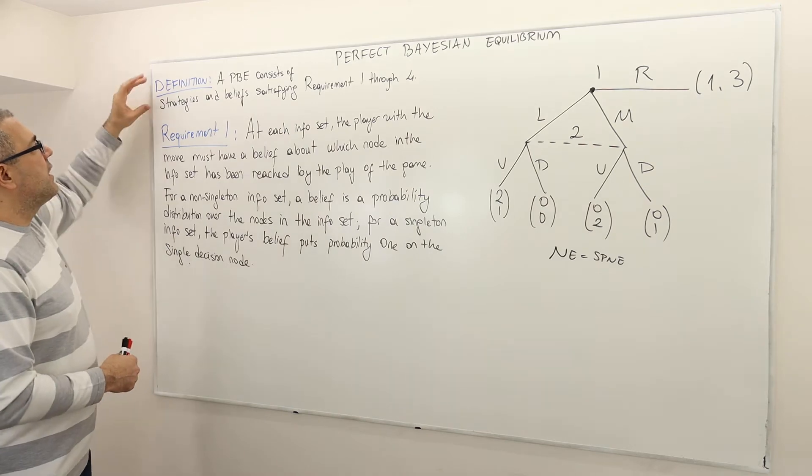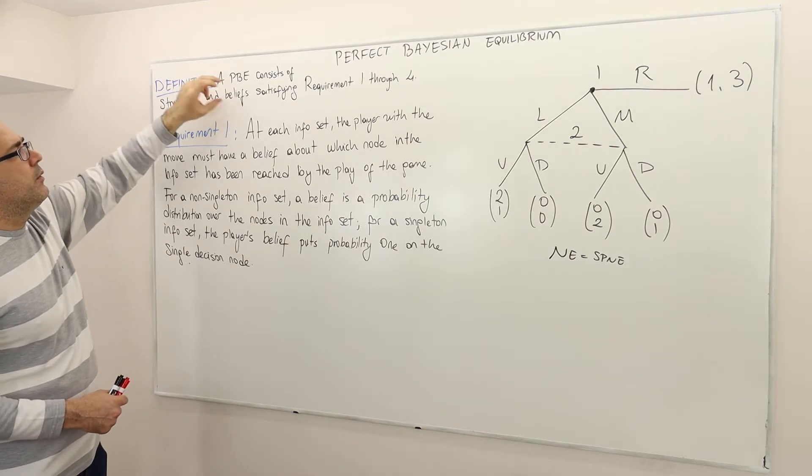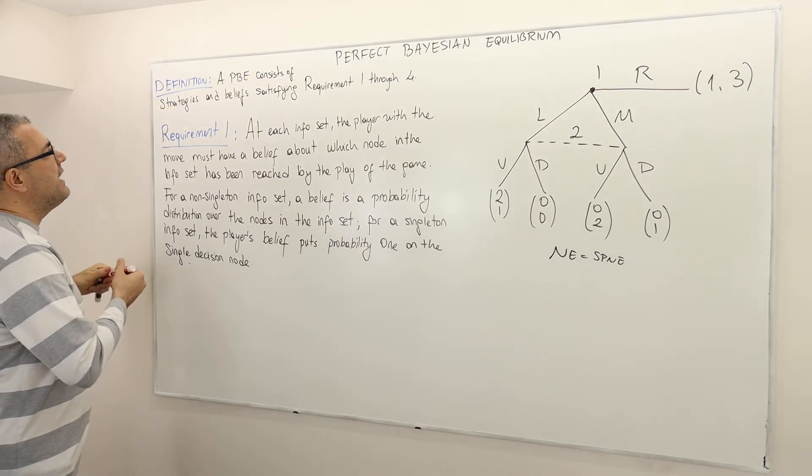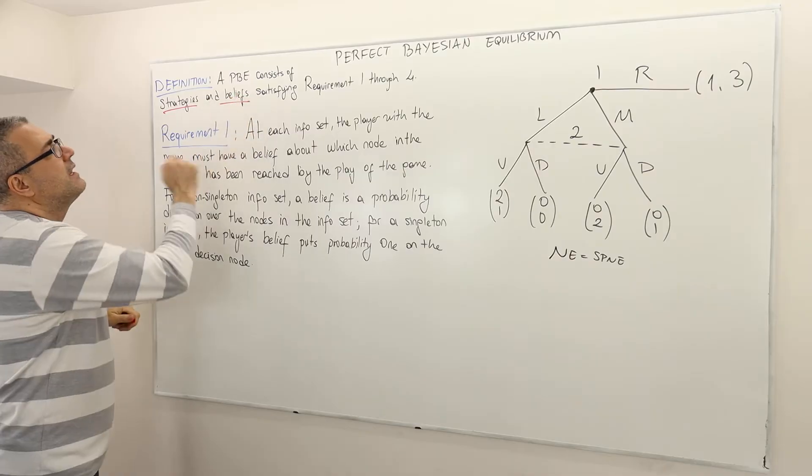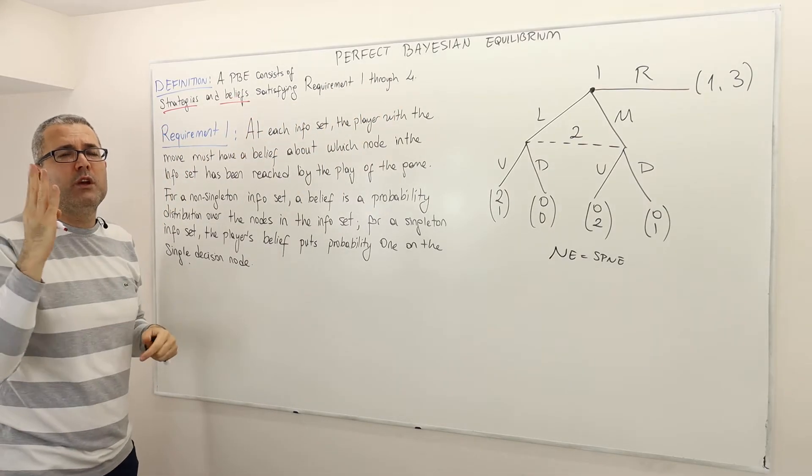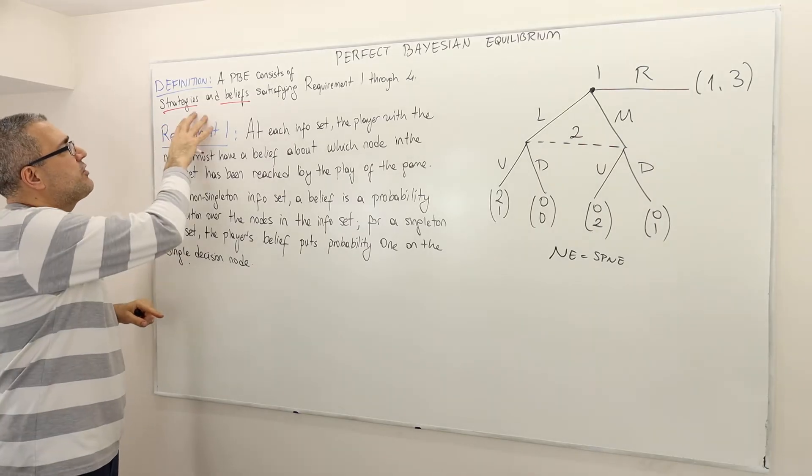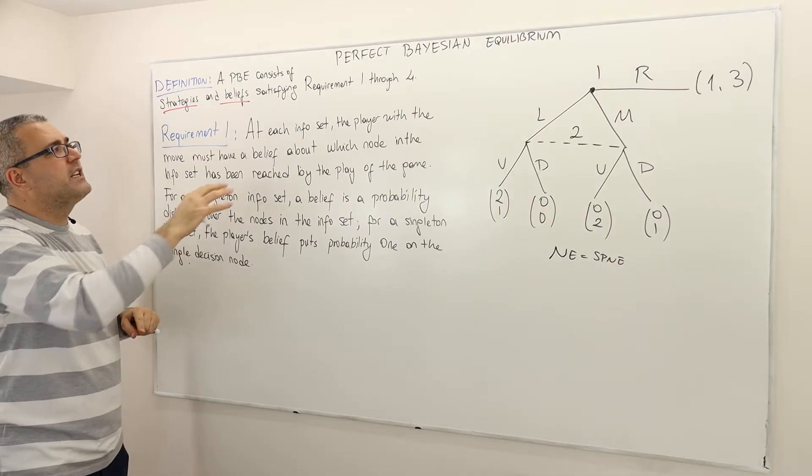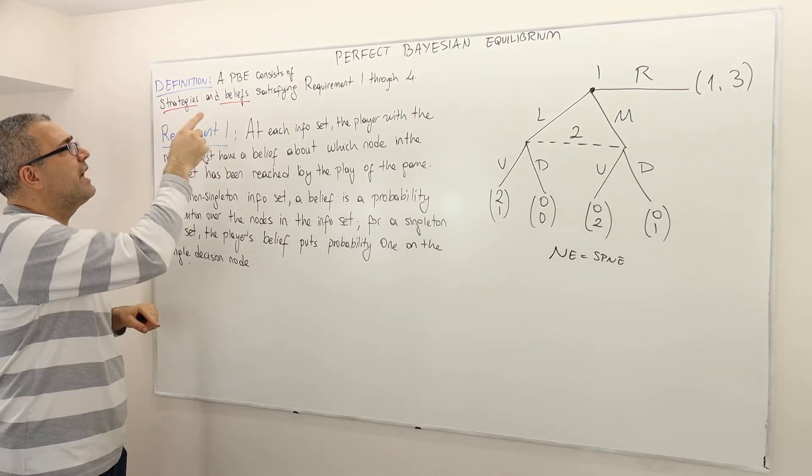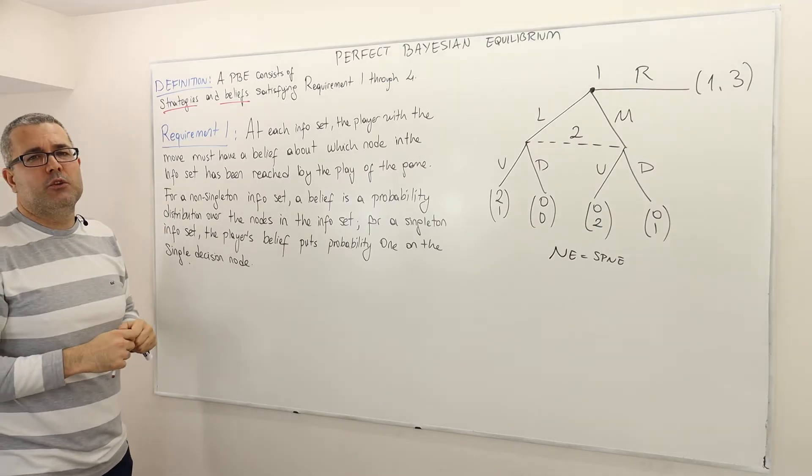Alright so let me start with the key definition. A perfect Bayesian equilibrium consists of strategies and beliefs satisfying requirement 1 through 4. So I'm going to give you 4 requirements. Requirement 1, 2, 3, 4. These strategies and beliefs must satisfy all those four requirements. If this is the case well then we call these strategies and beliefs a perfect Bayesian equilibrium.